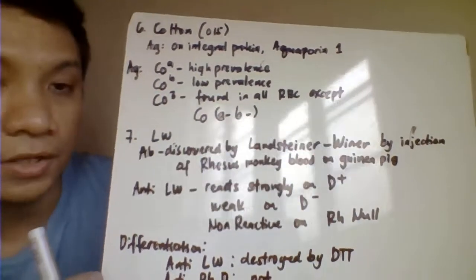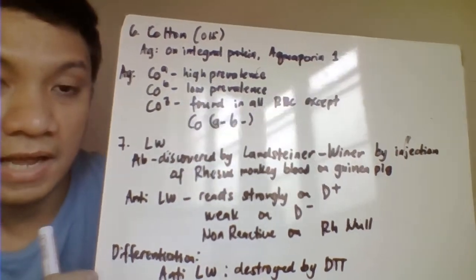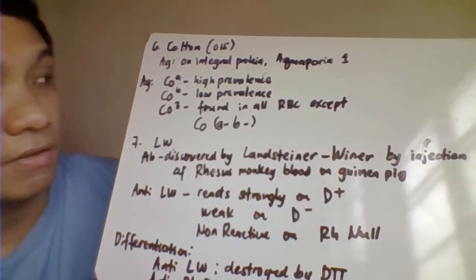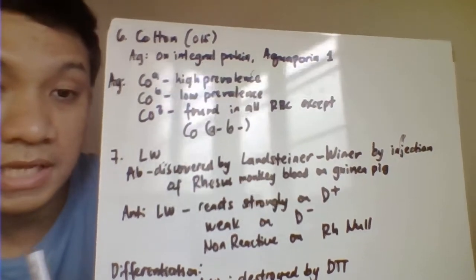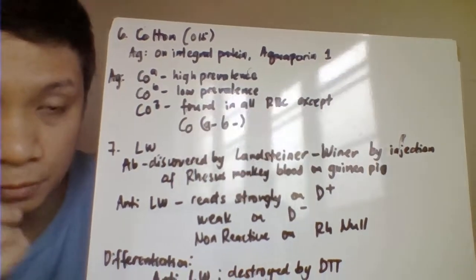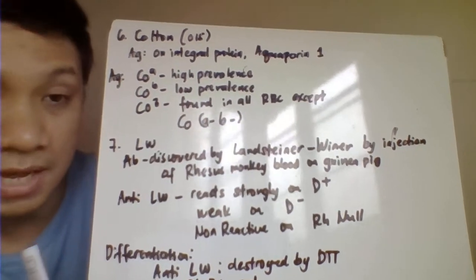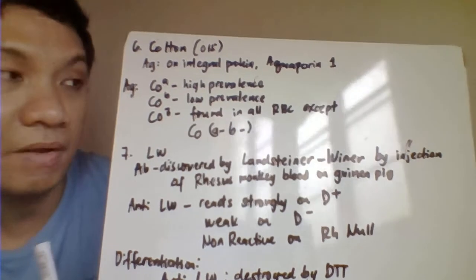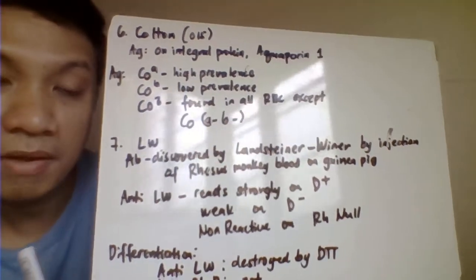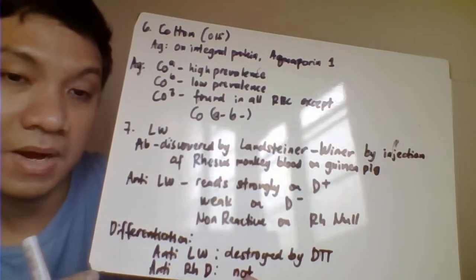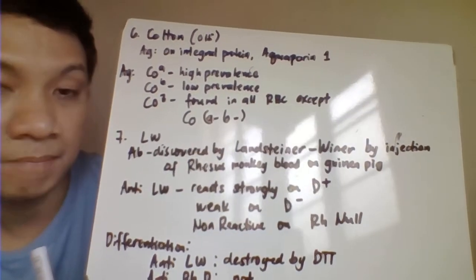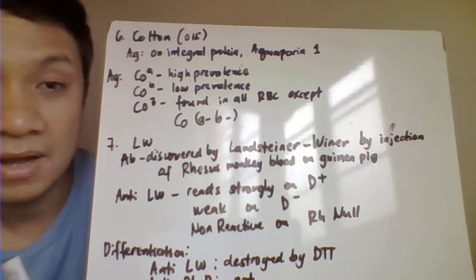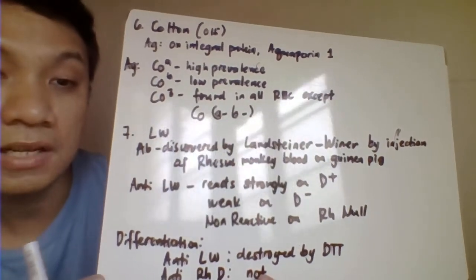Next we have your Colton blood group system, 015 ISBT classification number. This one could be found as integral part of your integral protein, aquaporin-1. There are two antigens here. Colton A is the high-prevalent antigen. Colton B is the low-prevalent antigen. Colton 3 could be found in all types of the RBC membrane except your Colton null type. The Colton null type is Colton A negative B negative, so it would not be expressing the Colton 3.